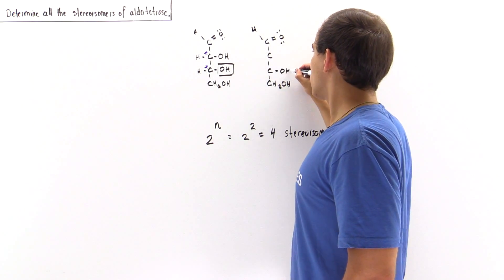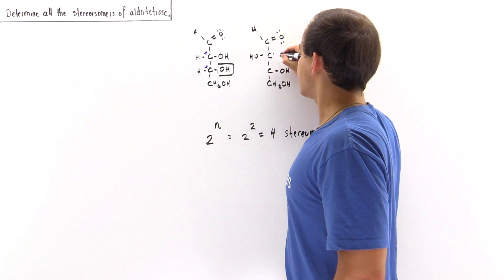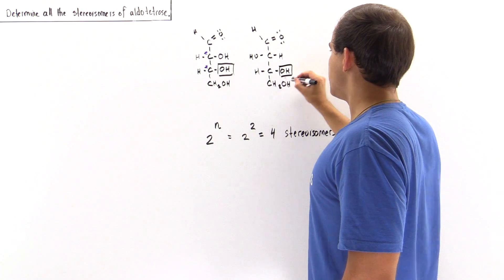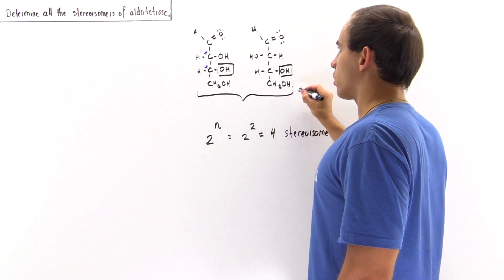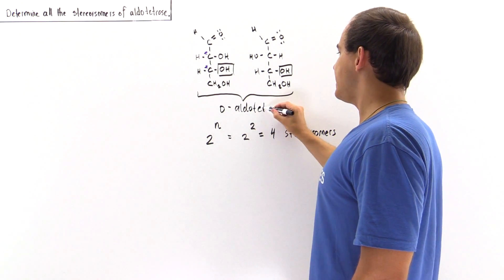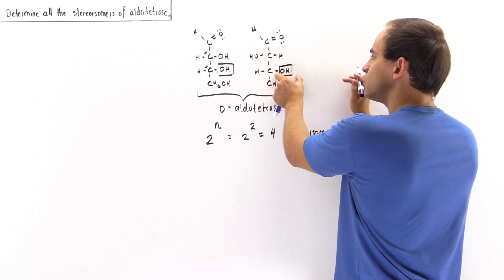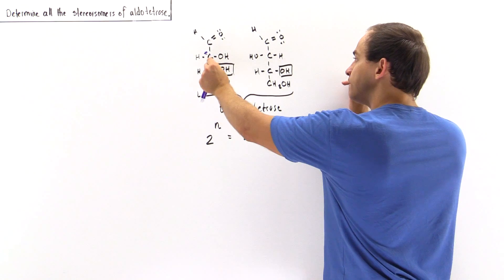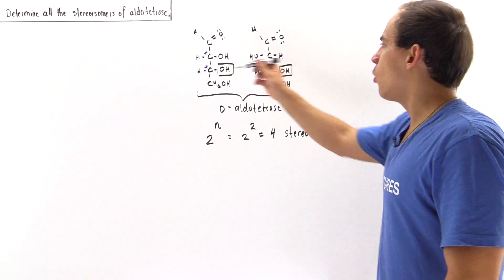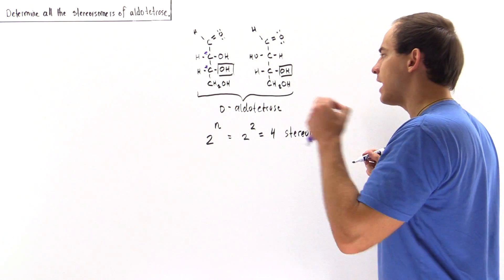In the second D-aldotetrose, the hydroxyl group on the upper middle carbon points to the other side — to the left. Both of these molecules are D-aldotetroses because the hydroxyl group on the final stereogenic carbon, right next to the primary alcohol group, points to the right side.